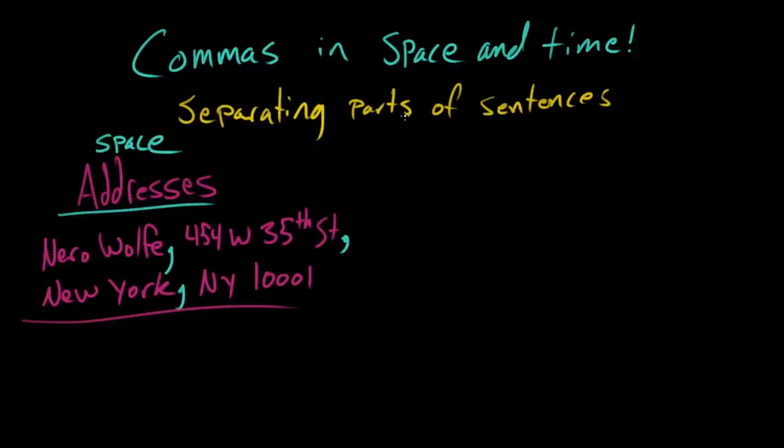You separate out all of these elements with commas. And this isn't just for writing addresses, this is for referring to any point in space on the planet. So if I wanted to tell you the name of my favorite city on the planet, I would say Ouagadougou comma Burkina Faso. Real place, I've never been there, I would like to go someday. And that is how you use commas in space.